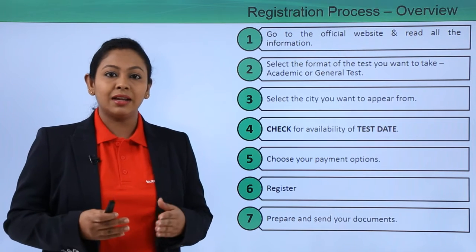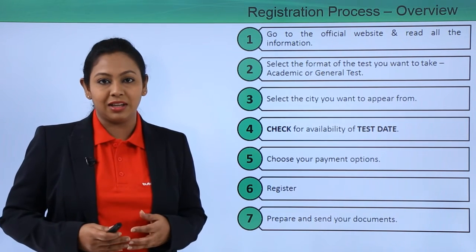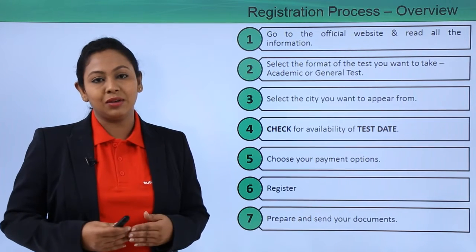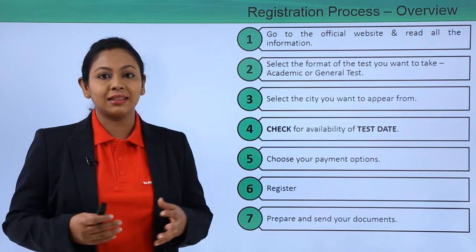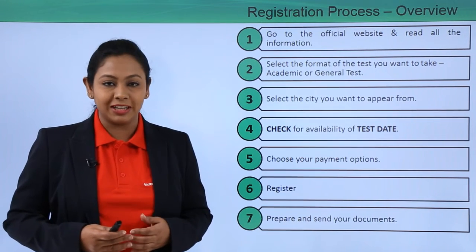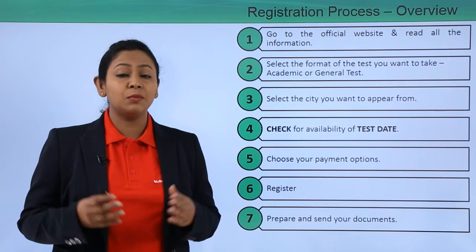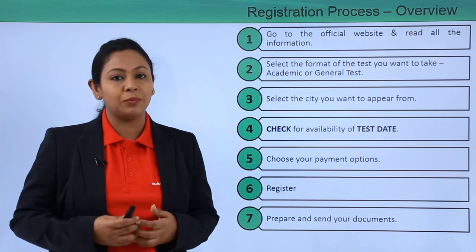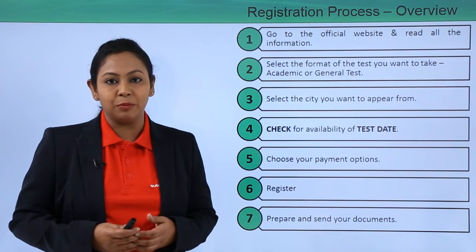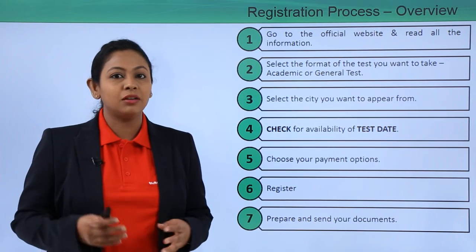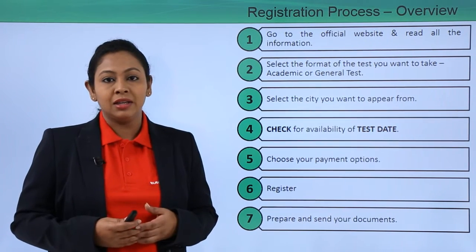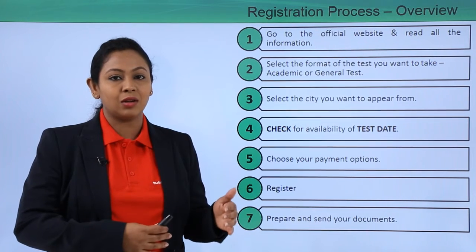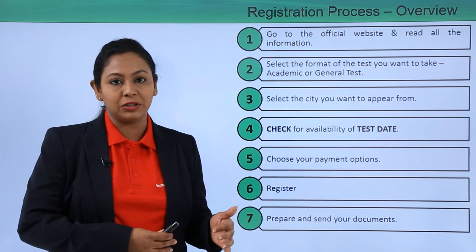Then decide on which format of the test you want to take — the Academic or the General. Once you're done with that, select the city from where you want to take up your test. Post that comes the most important part: the date on which you want to appear for the exam. I would suggest keep around four to five dates in mind, so that if a seat slot is not available on a particular date, you can move on to the next date of your choice.